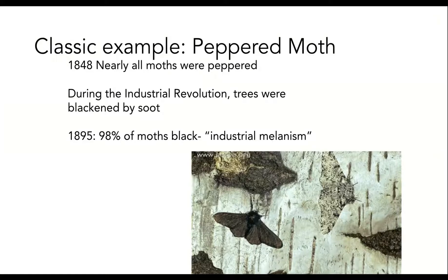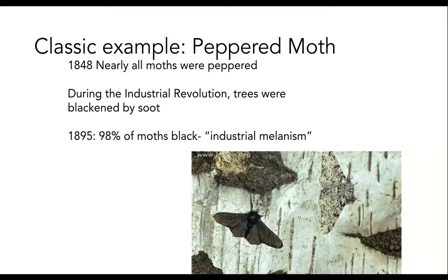Perhaps the most classic example of natural selection, observed long after Darwin's death, is that of the peppered moth — a type of moth with natural variation in its population, whereby most moths are white with black flecks, and some moths are dark gray or black. This is similar to the black squirrels you may have seen on campus. They are what is called a dark or melanistic morph, or different variety of the same species. I'm guessing you know the story of the peppered moth, but what I'll share might include some details your high school science teacher hadn't previously told you. In the 1850s, most of the peppered moths living in forests near cities in both Europe and North America were peppered.